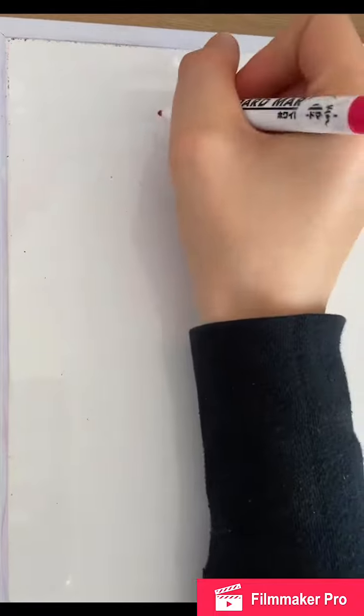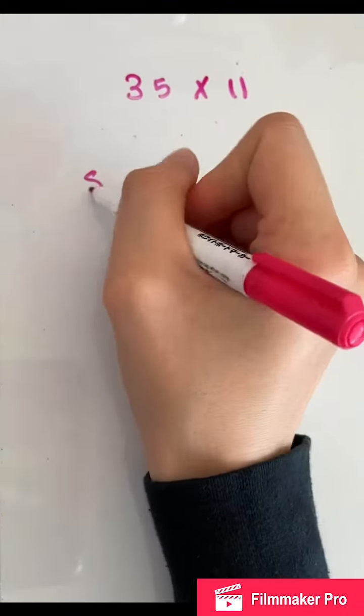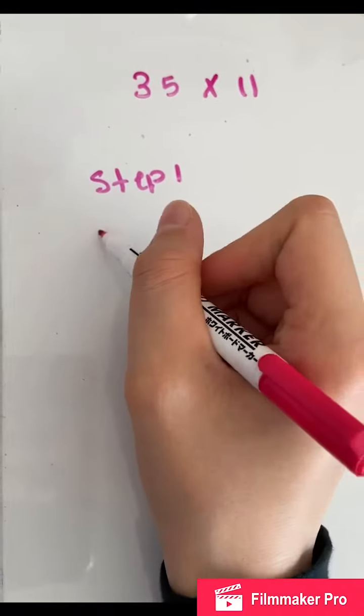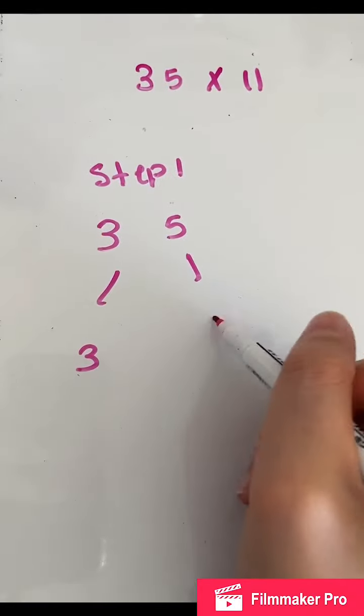Try this trick with another number. So let's do 35 times 11 now. So step one was to split the number, right? Three and five, it goes to three and five.